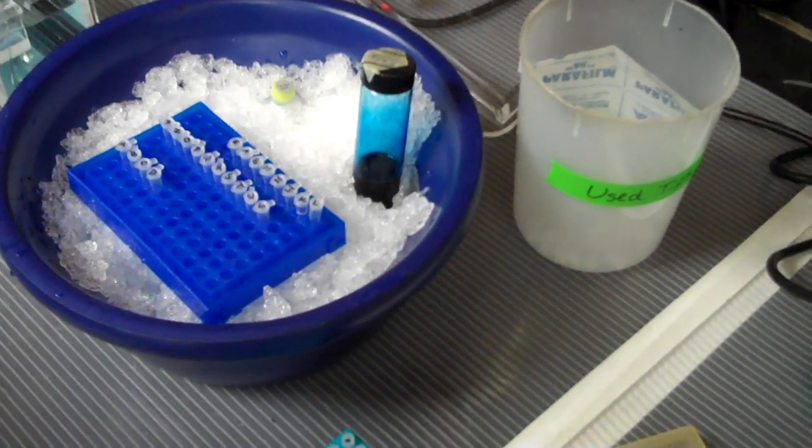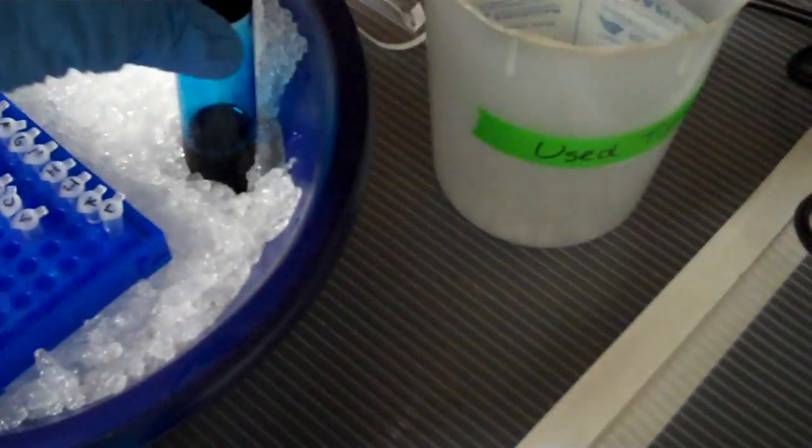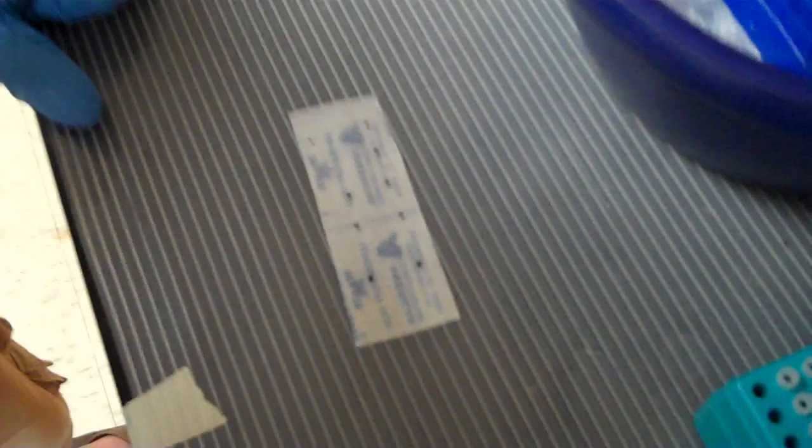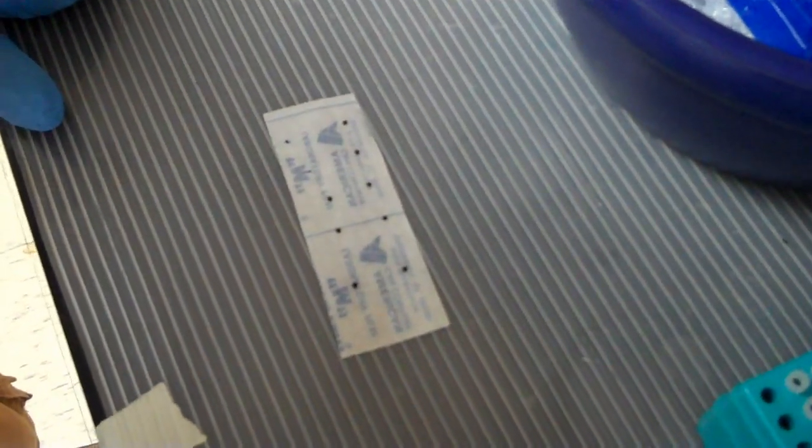This is how you load a gel. First, take two microliters of loading dye and put it on a slice of parafilm for each sample you'll have.